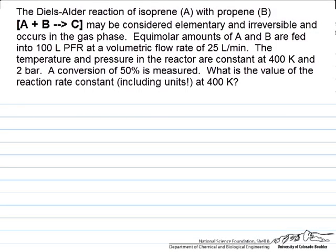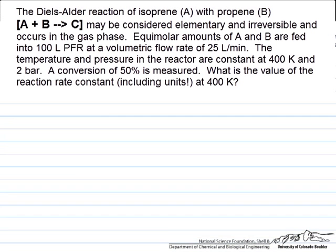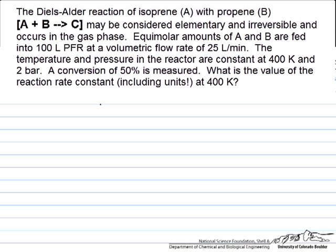This problem deals with an isothermal plug flow reactor of a simple reaction type: A plus B goes to C, occurring in the gas phase. This is important because we're going from 2 moles of reactants to 1 mole of products.